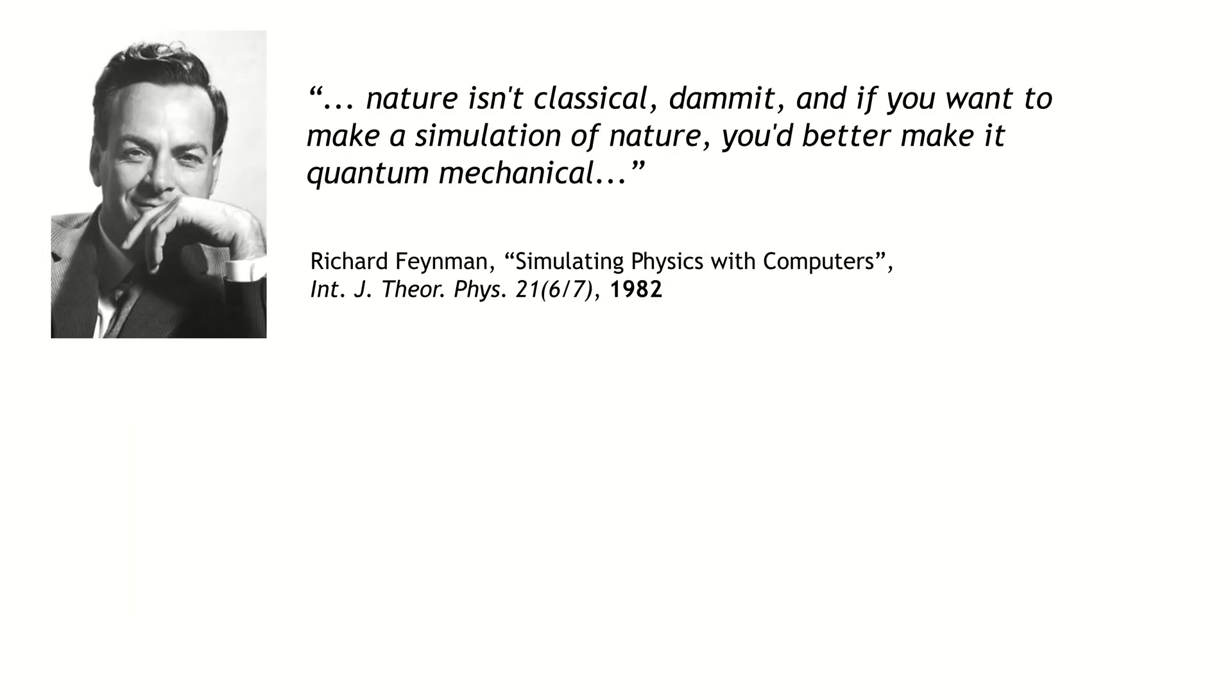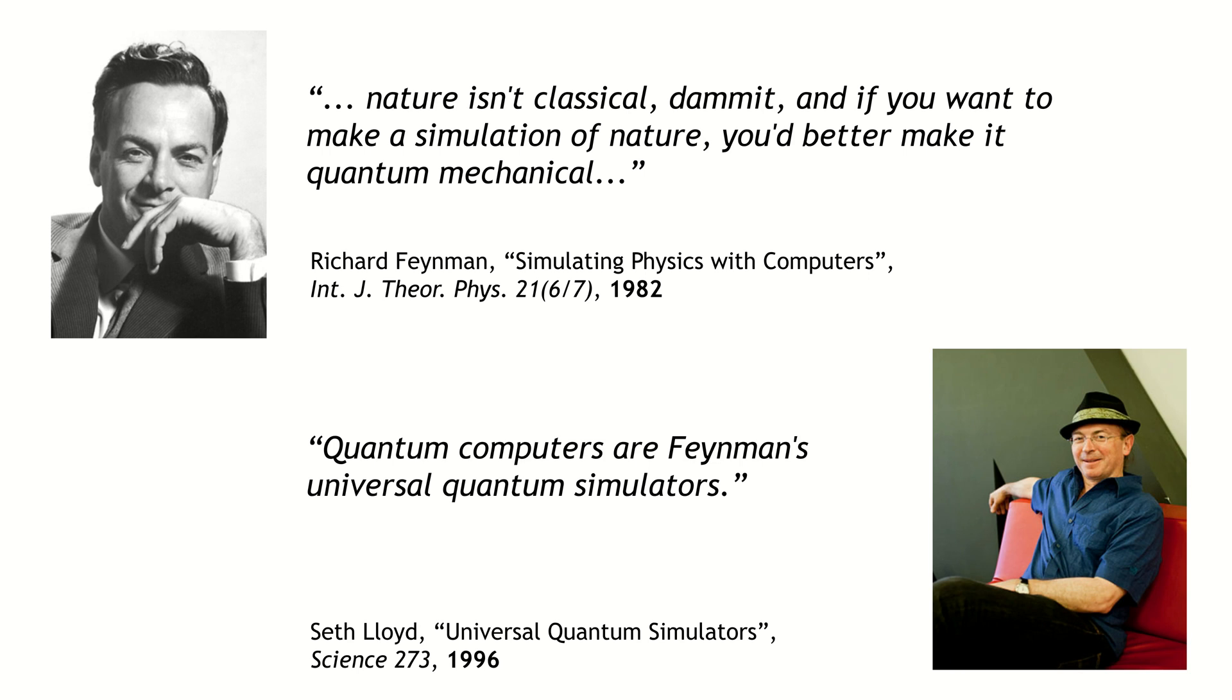In 1982 Richard Feynman proposed to use a quantum computer for Hamiltonian simulation. And in 1996 Seth Lloyd proved this statement. He showed that universal quantum computers can calculate the evolution of a quantum system efficiently, which means with polynomial time and memory resources in the size of the target system.